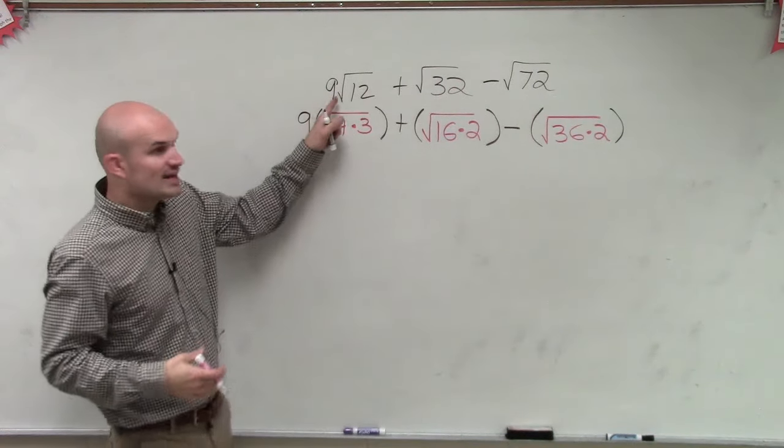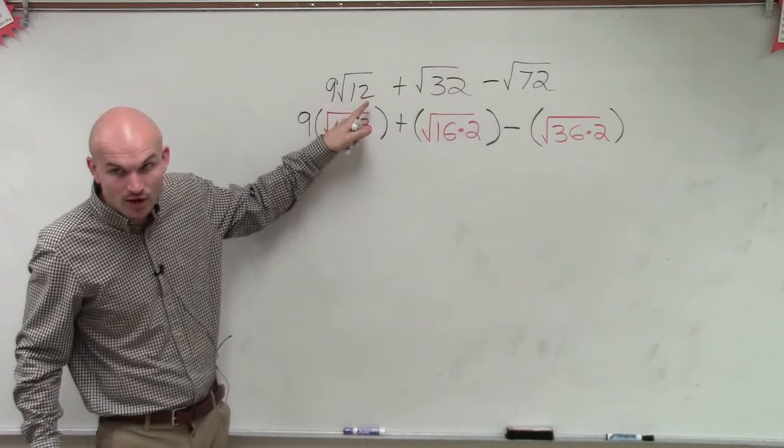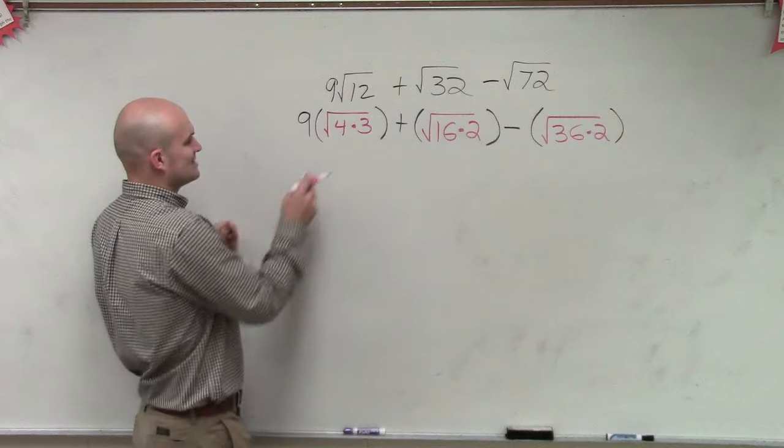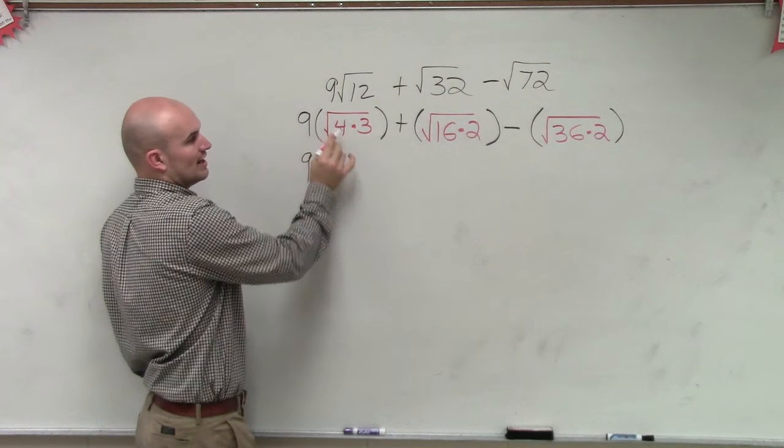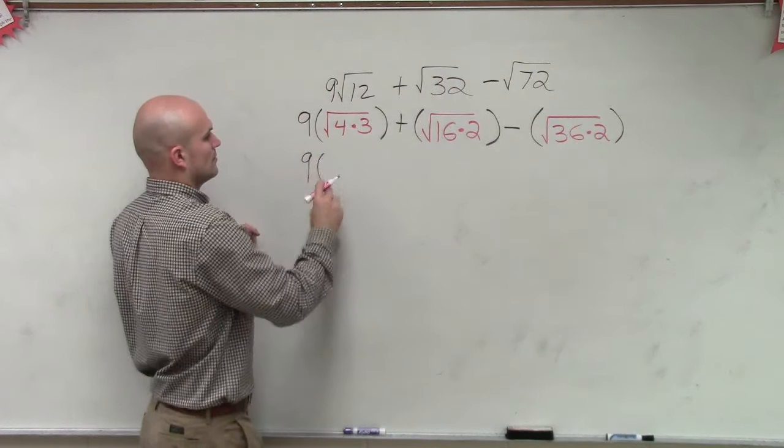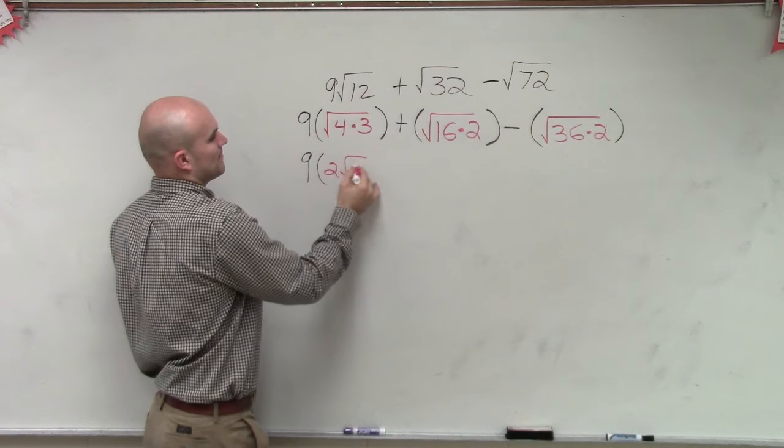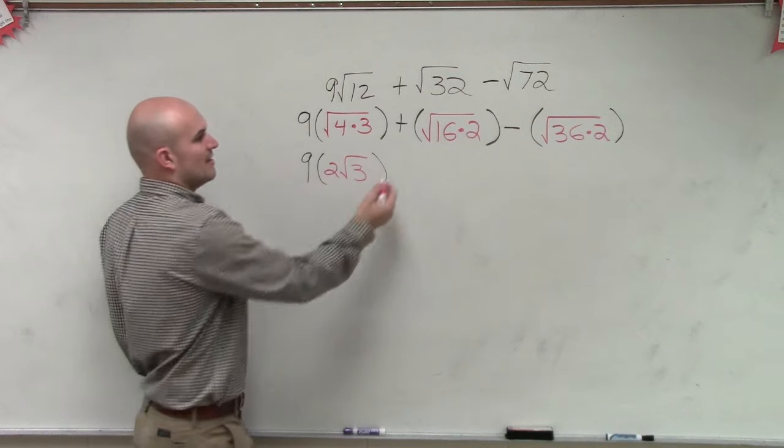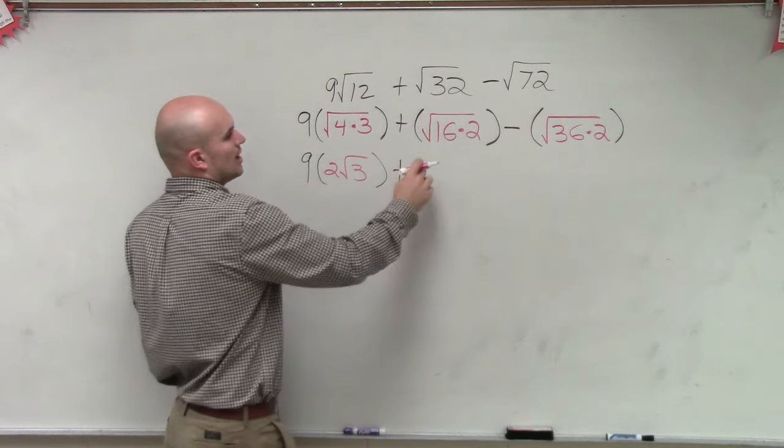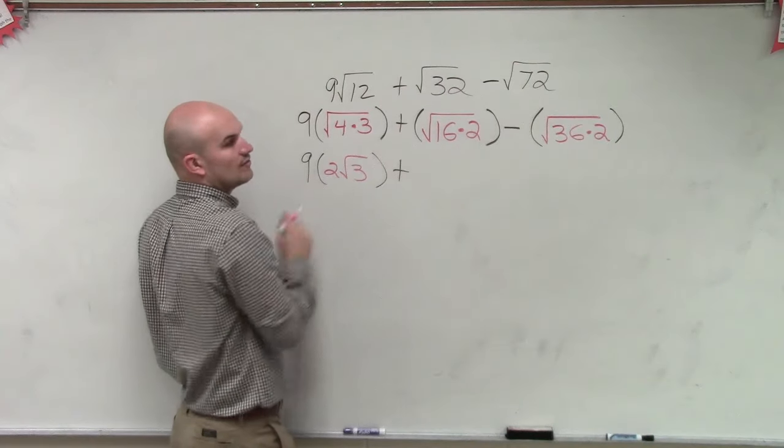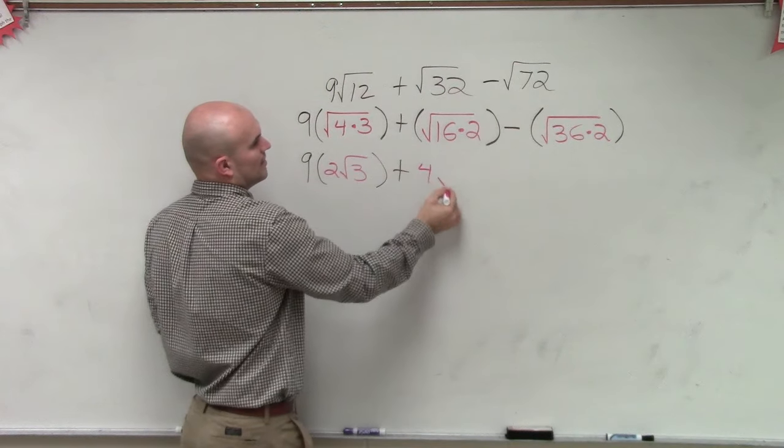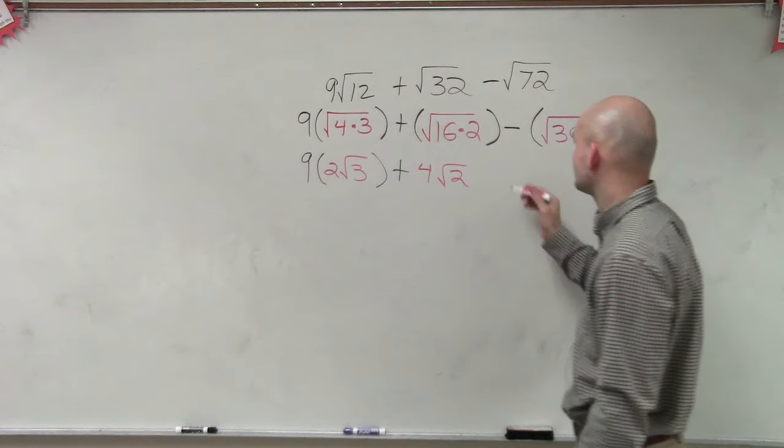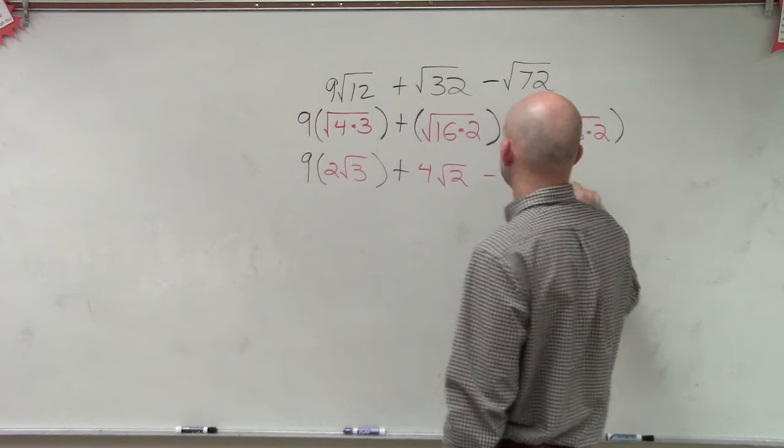So does everybody see what I did? Notice this is 9 times the square root of 12. So when I simplify this, I get 9. The square root of 4 is 2 times square root of 3. Notice how it's still 9. Then I add that to what is the square root of 16? 4, square root of 2. And then minus the square root of 36 is 6, square root of 2.